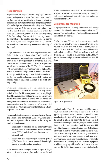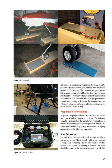Weighing with platform scales typically takes only one-third of the time needed to weigh with load cells. All scales for aviation use, manual or electronic, must be protected when stored or shipped, and they must be checked periodically for accuracy. The maximum recognized period between calibration checks is 12 months; however, this period may be reduced by an airworthiness authority dependent on the conditions of use. Scales in daily use may require a shorter interval and/or testing to determine continued accuracy. Scales should be returned to the manufacturer for proper calibration and testing.